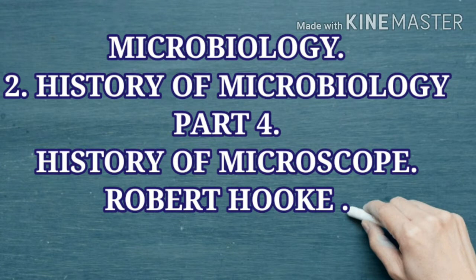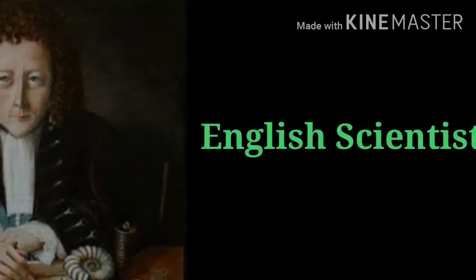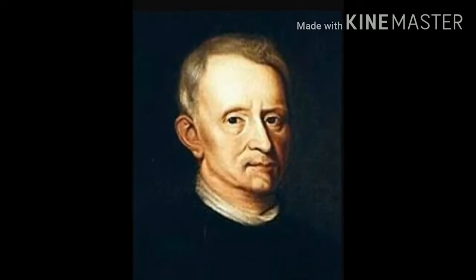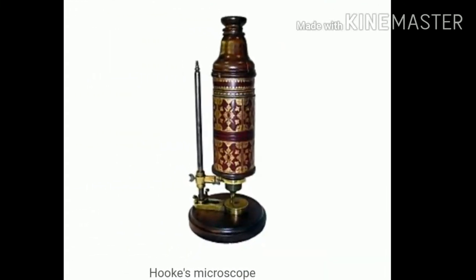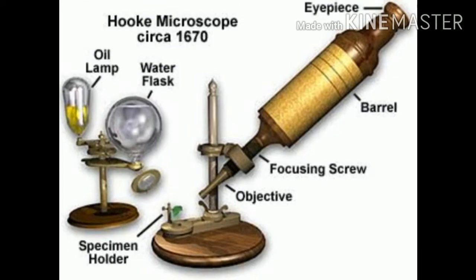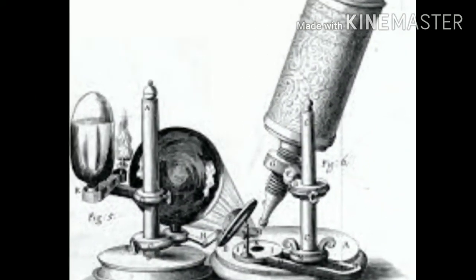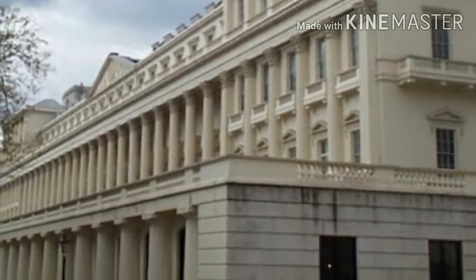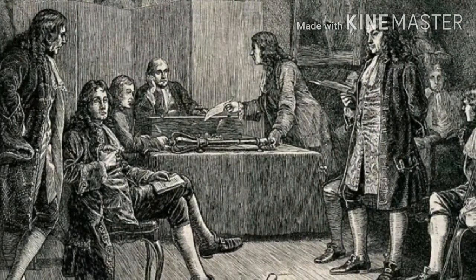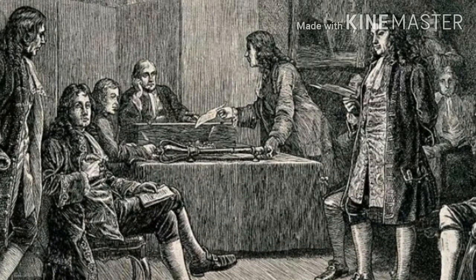Under history of microscope, we are going to see about the contribution of Robert Hooke in the development of microscope. Robert Hooke was an English scientist, architect, astronomer, biologist, and ingenious experimenter who spent much of his life working with microscopes and improved their design and capabilities. Using a microscope, Hooke was the first to visualize a microorganism. Hooke was also a member of the Royal Society of London and since 1662 was its curator of instruments.